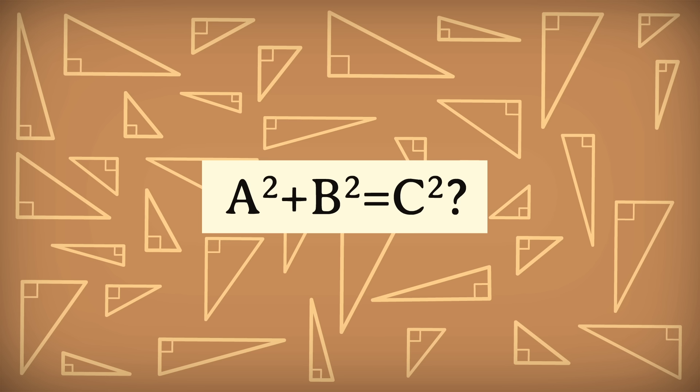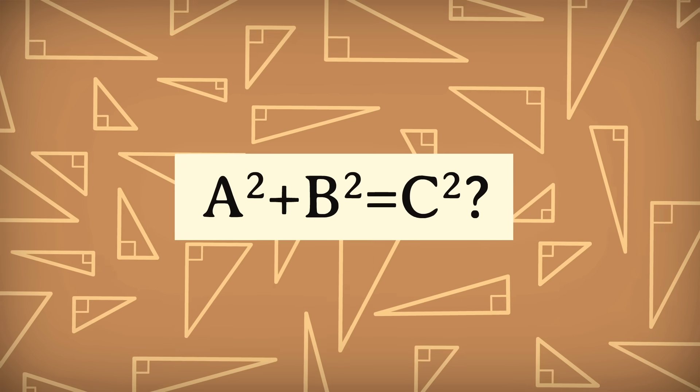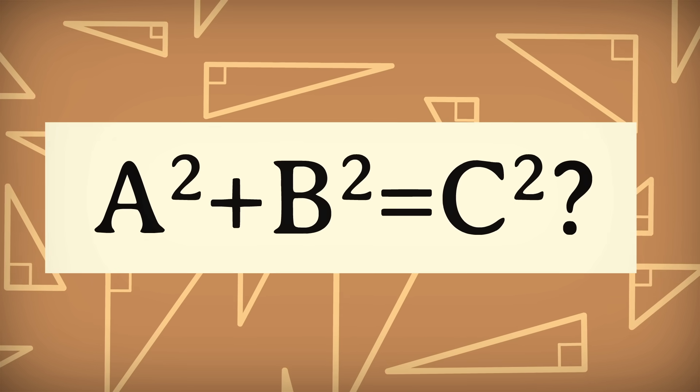But how do we know that the theorem is true for every right triangle on a flat surface, not just the ones these mathematicians and surveyors knew about? Because we can prove it. Proofs use existing mathematical rules and logic to demonstrate that a theorem must hold true all the time.